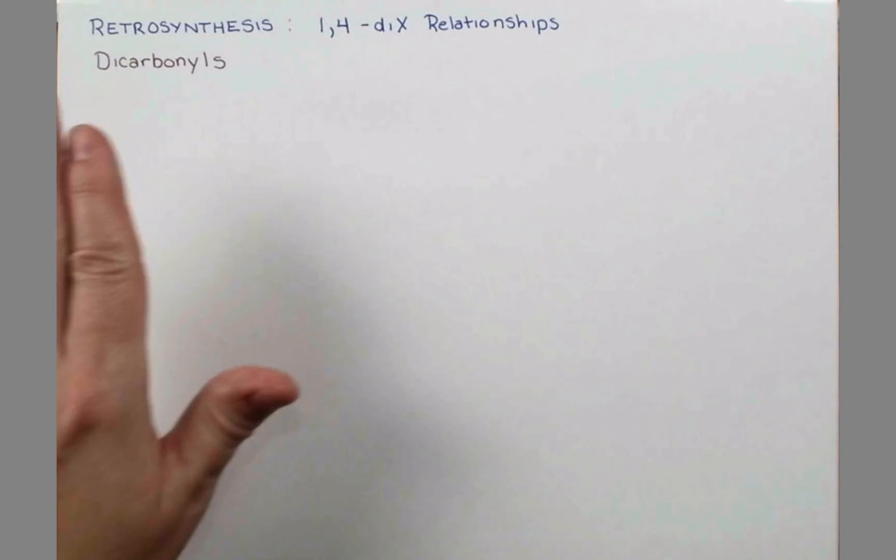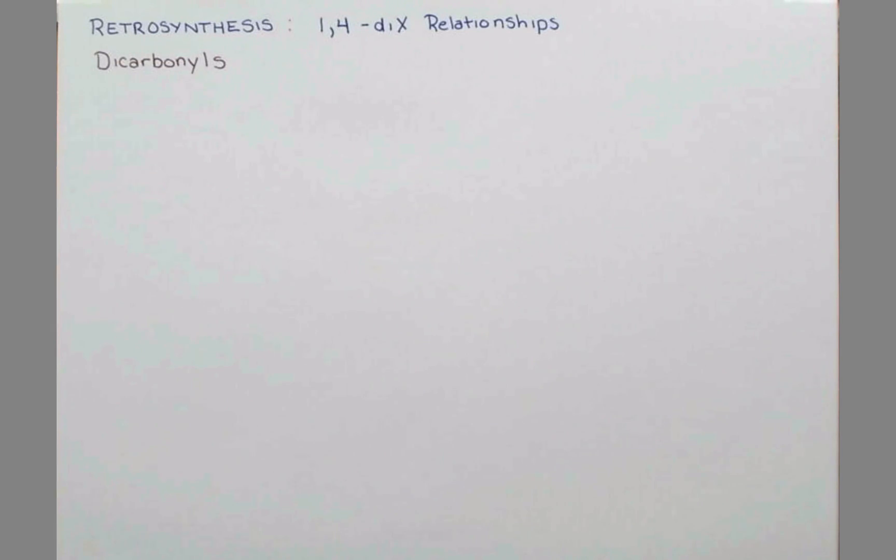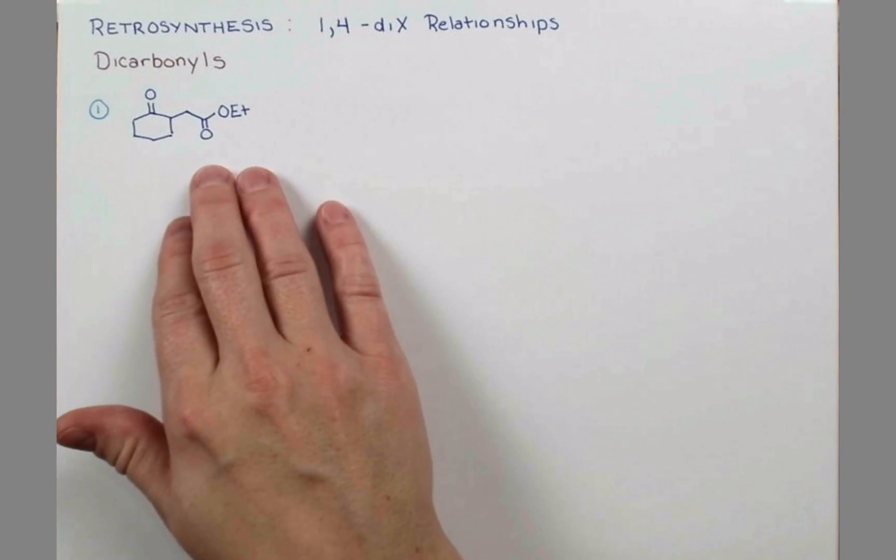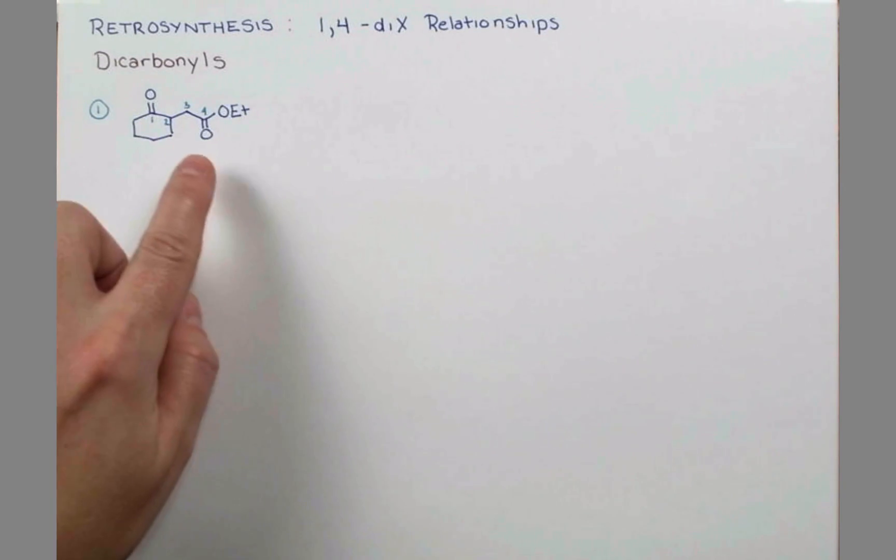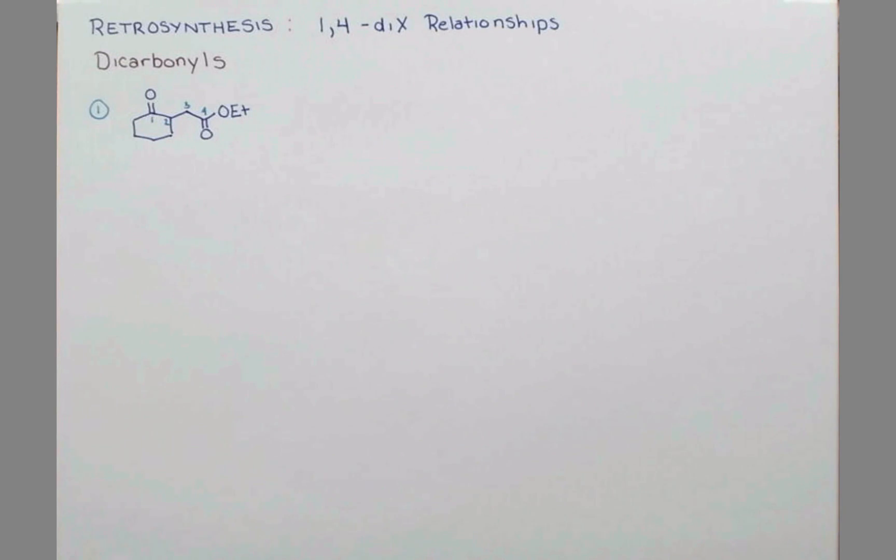Let's look at two methods to make dicarbonyl compounds with this relationship. Take this compound for example. If we number our carbons, we see that each of these carbonyl groups is on the 1 and 4 position. Now we need to break a bond and think about this retrosynthetically. If we cleave between carbons 2 and 3, we can trace this back to a couple synthons.